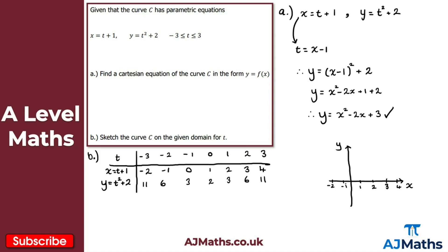Plotting the points: we have (minus 2, 11), (minus 1, 6), (0, 3), (1, 2), (2, 3), (3, 6), and (4, 11). Notice that (minus 1, 6) and (3, 6) should be at the same height, as should (minus 2, 11) and (4, 11). We're going to get a parabola — this is a quadratic and from the points plotted we can clearly see that quadratic shape.